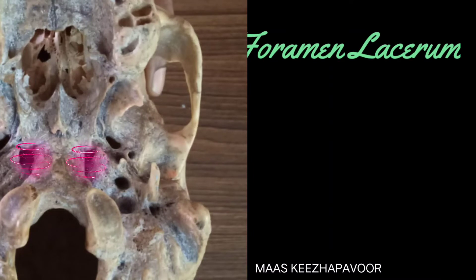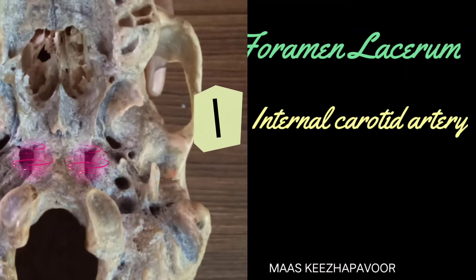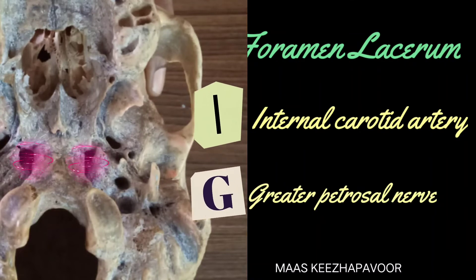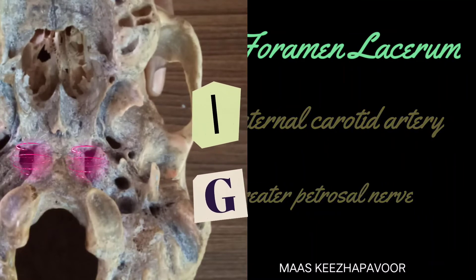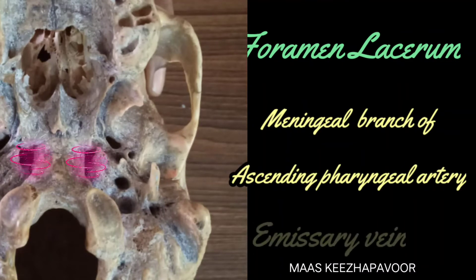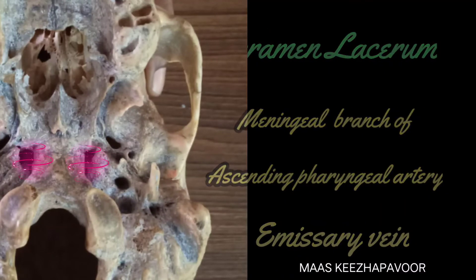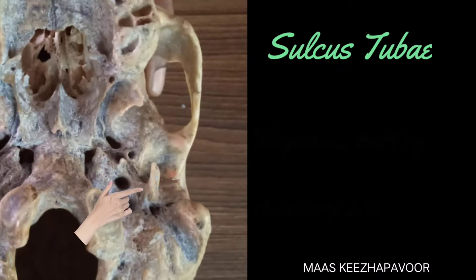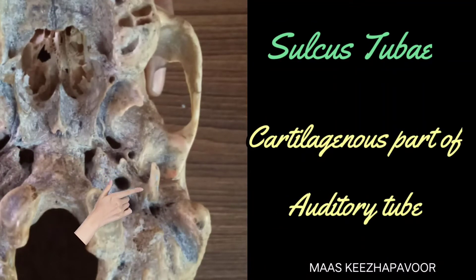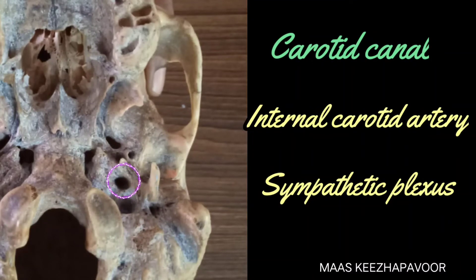The foramen lacerum is covered by fibrocartilage, and two structures traverse it: the internal carotid artery and the greater petrosal nerve. The structures passing through foramen lacerum are the meningeal branch of the ascending pharyngeal artery and an emissary vein connecting the cavernous sinus with the pharyngeal plexus of veins. The sulcus tubae lodges the cartilaginous part of the auditory tube. The carotid canal transmits the internal carotid artery and the sympathetic plexus around it.